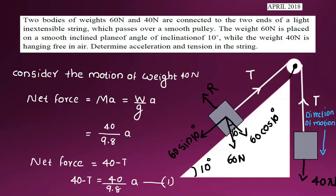We will discuss the pulley problem related to the 2015 scheme from the previous year's question paper. The first question: two bodies of weight 16 N and 40 N are connected to the two ends of a light inextensible string which passes over a smooth pulley. The weight 16 N is placed on a smooth inclined plane of angle of inclination 10 degrees, while the weight 40 N is hanging free in the air. Determine the acceleration and tension in the string.